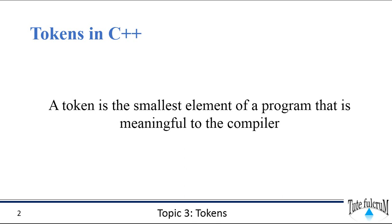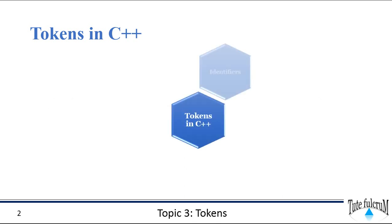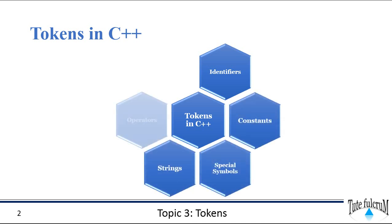A token is the smallest element of a program that is meaningful to the compiler. Tokens can be classified as identifiers, constants, special symbols, strings, operators, and keywords.